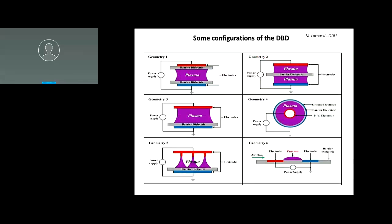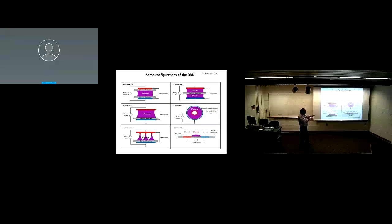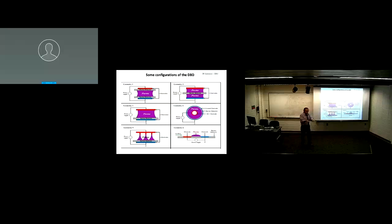There are different DBD configurations. You can have two electrodes — top and bottom — with the dielectric barrier like glass in between, applying AC power usually in the kilohertz frequency range at a few kilovolts. You can put the dielectric in the middle, use a cylindrical geometry like Siemens did, use just one barrier, or use surface electrodes to create surface plasma. There are all these geometries to play with depending on the application.